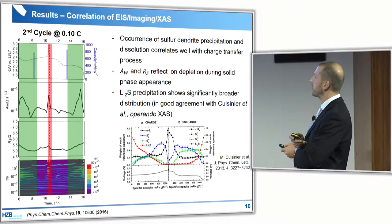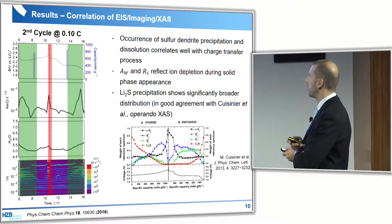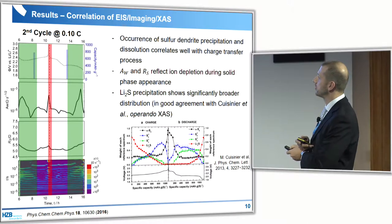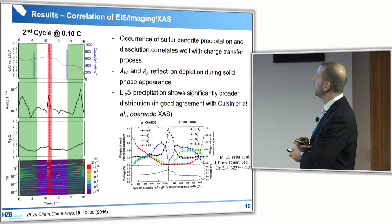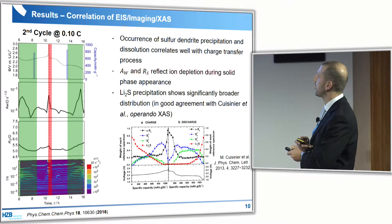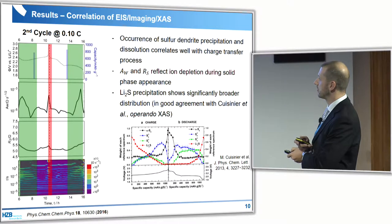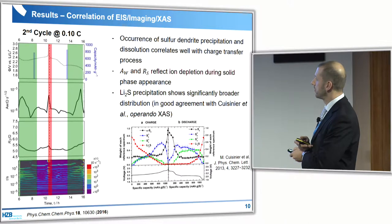This is in full agreement with X-ray absorption spectroscopy done in operando mode by Cuisinier et al. The occurrence of sulfur dendrite precipitation and dissolution is very well correlated to the highlighted region shown here. The Warburg impedance and solution resistance reflect ion depletion during solid phase appearance. The Li2S precipitation is in good agreement, so we can say this charge transfer is connected to the Li2S process and the other to sulfur precipitation.